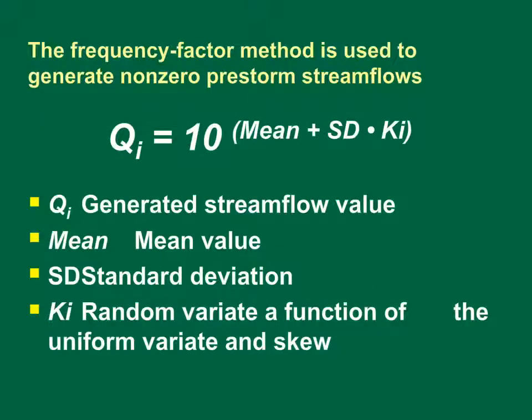The frequency factor method is used to generate or estimate the non-zero pre-storm streamflows by using the mean, standard deviation, and skew of the logarithms of non-zero mean daily flow data. The skew of the logarithms of streamflow defines the relation between the probability of occurrence and the frequency factor. If the skew is equal to zero, the random variants have a normal distribution and the streamflows would be log-normally distributed. Non-zero skew values result in streamflows with a log Pearson type 3 distribution.